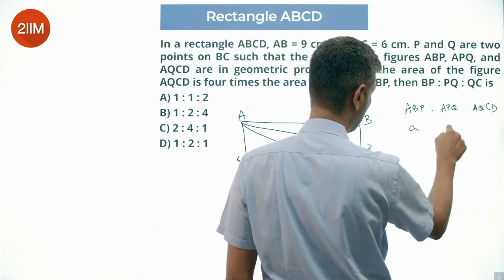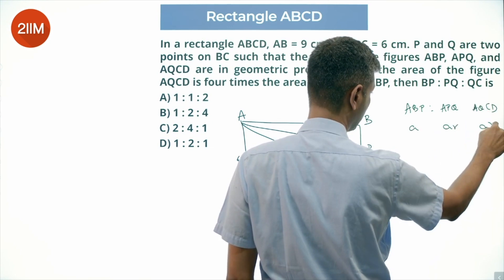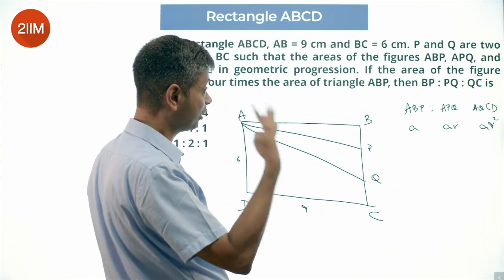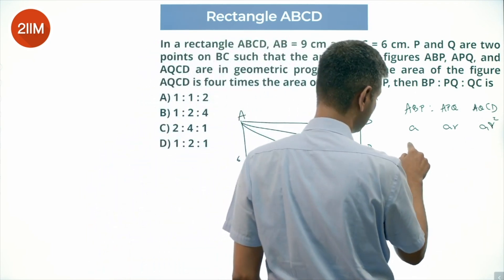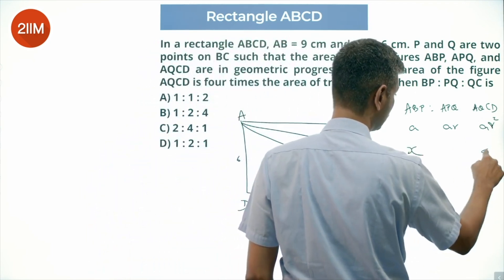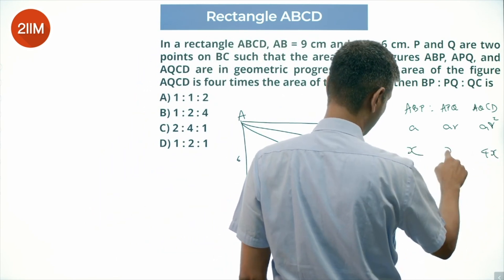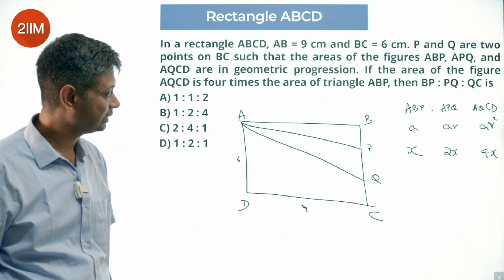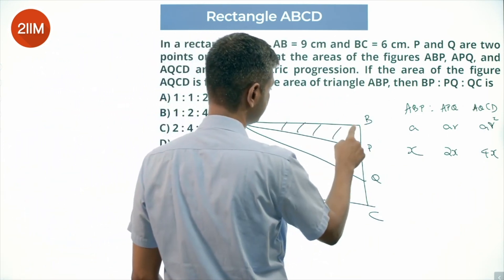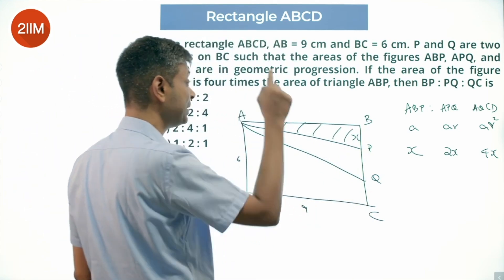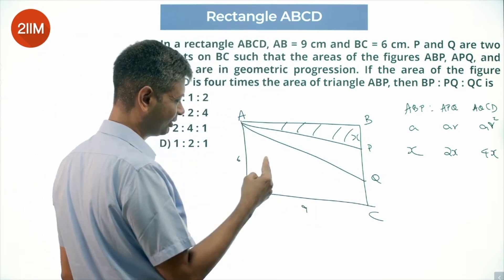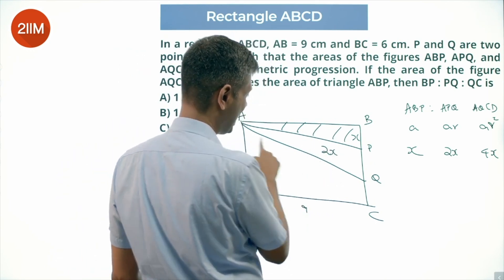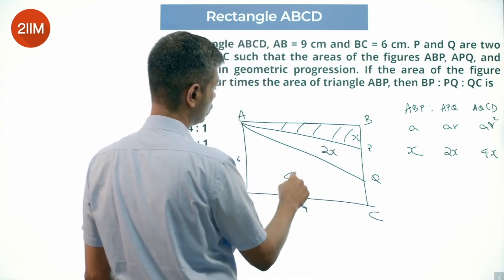The area of AQCD is 4 times that of ABP. So if ABP has area X, then APQ should be 2X, and AQCD should be 4X — forming a geometric progression with common ratio 2.